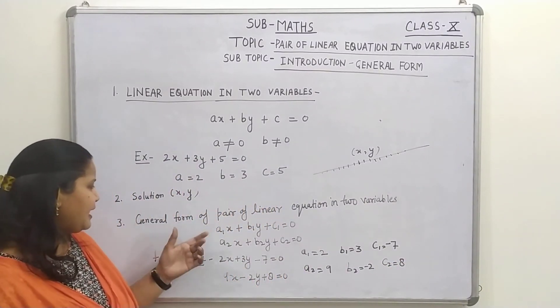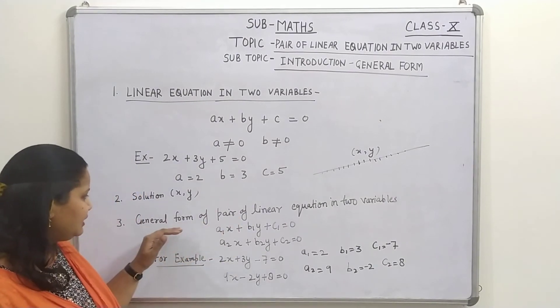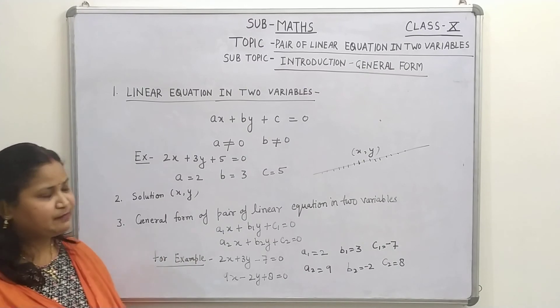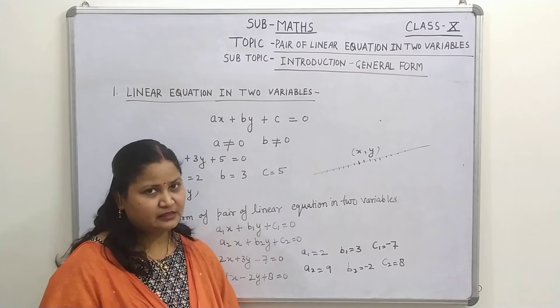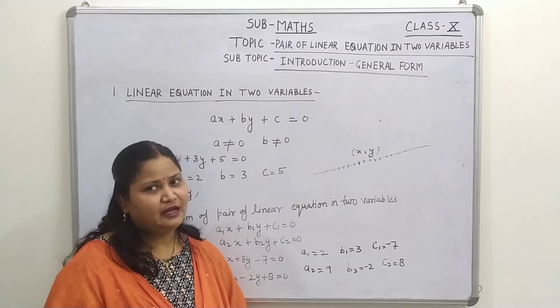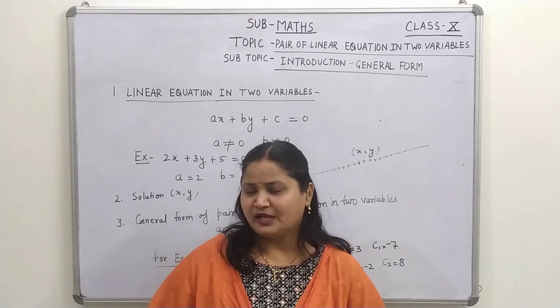So, children, as it is a pair of linear equation in two variables, if we draw the graph of this pair, suddenly we will get two straight lines. So, we will discuss it more and we will continue it. Keep on practicing at your home. Thank you.